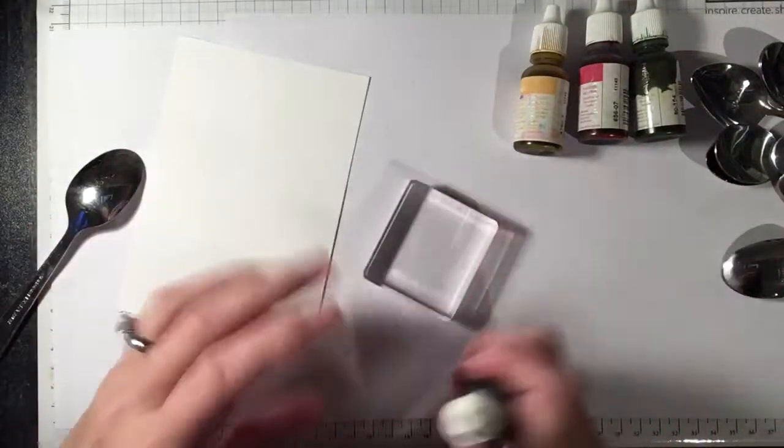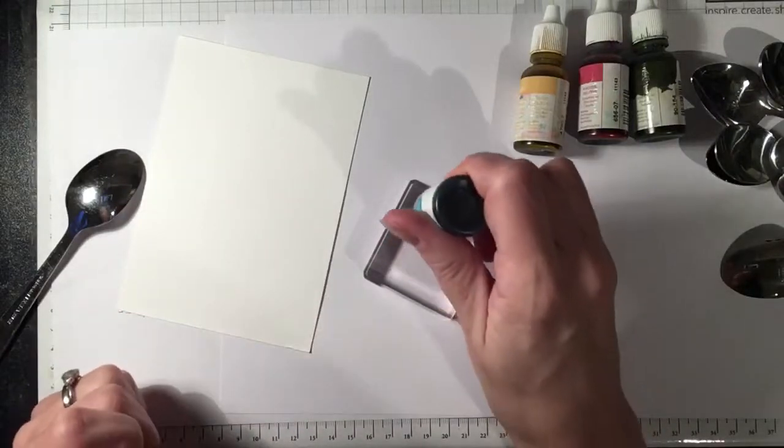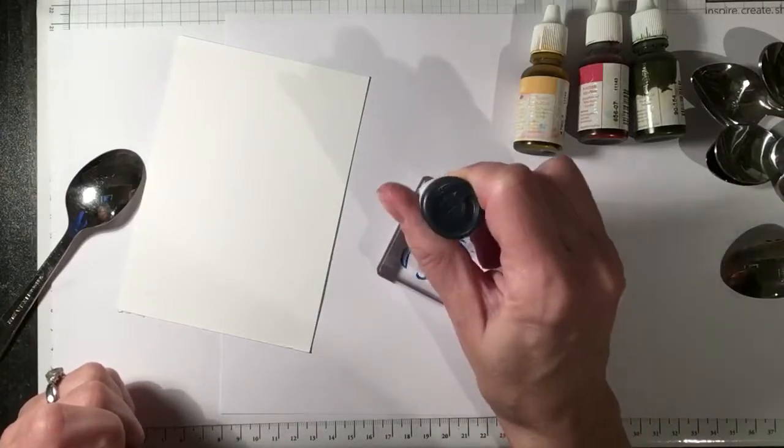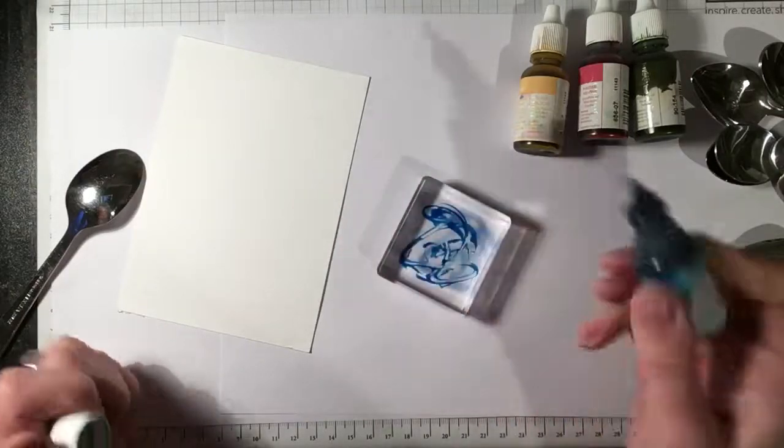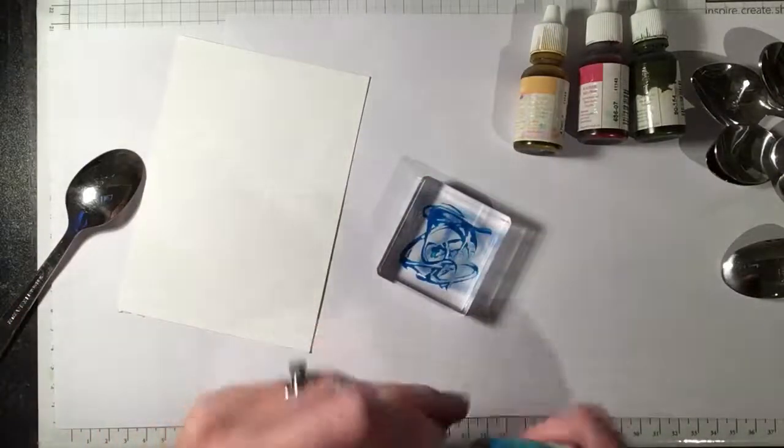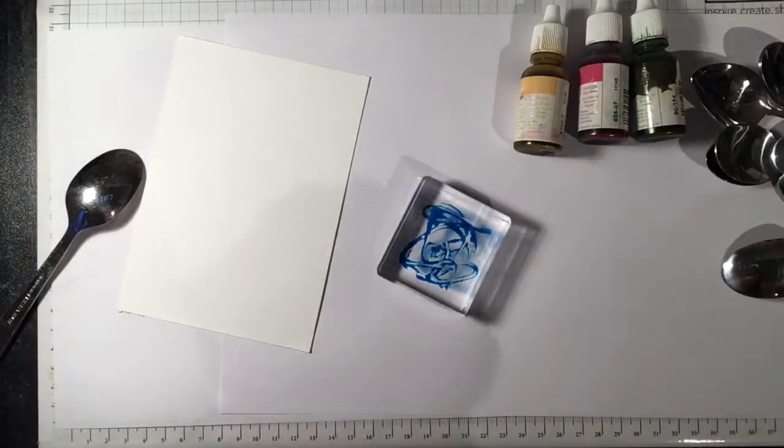The first thing you do is put some ink onto your block. There's a couple different ways of doing this. You can do one color per block and do a big smooshy pattern, or you can put several colors on one block.